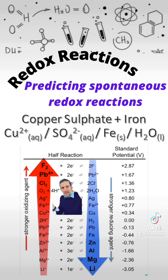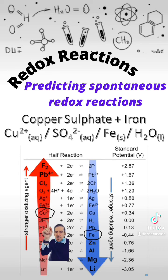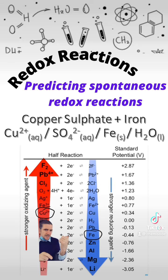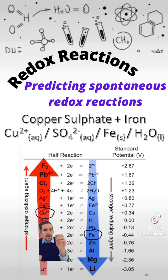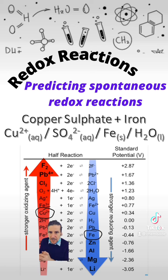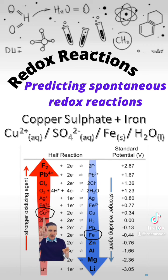Let's have a look at where these things are on our electrochemical series. Copper two ions are just above, and iron solid is just to the right. So what we have here is the oxidant — copper two ions — is above our iron solid. That means we will see a reaction occur. We will see a reaction because we have a strong enough oxidant to oxidise our reductant.